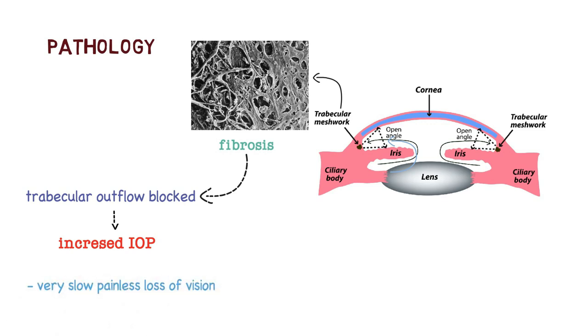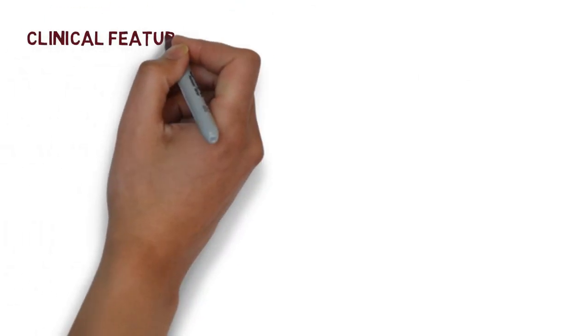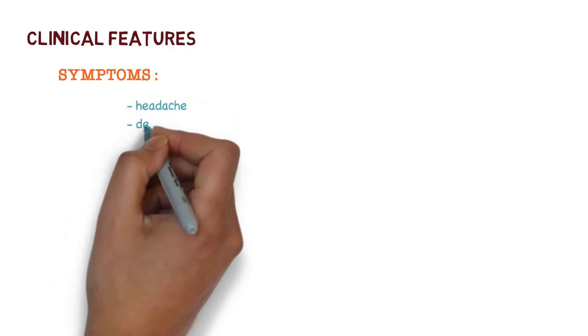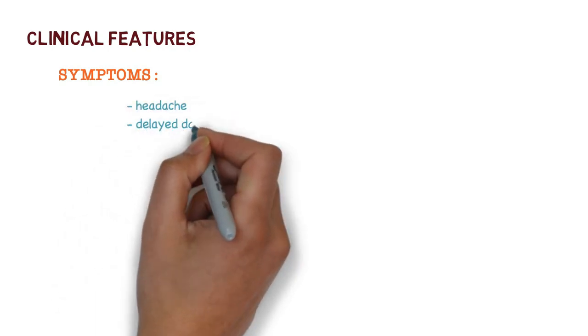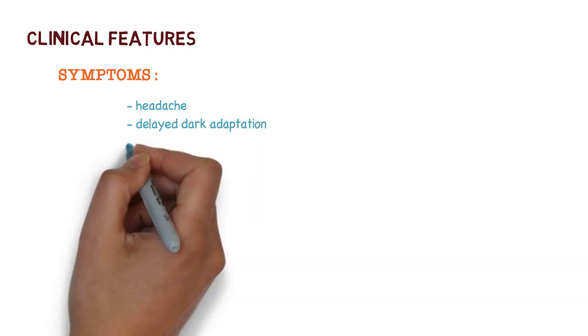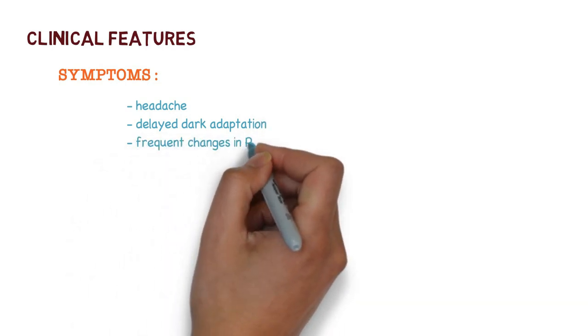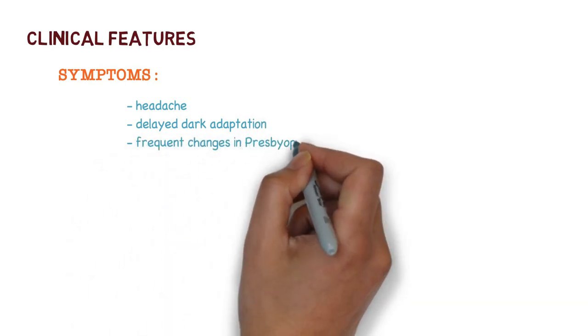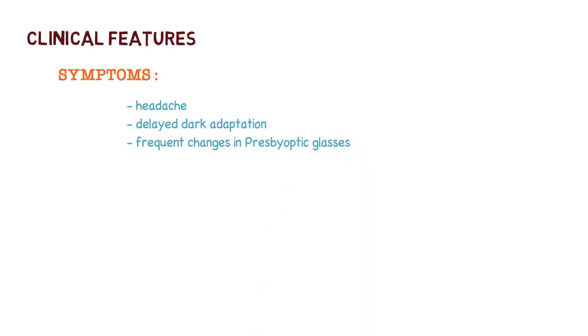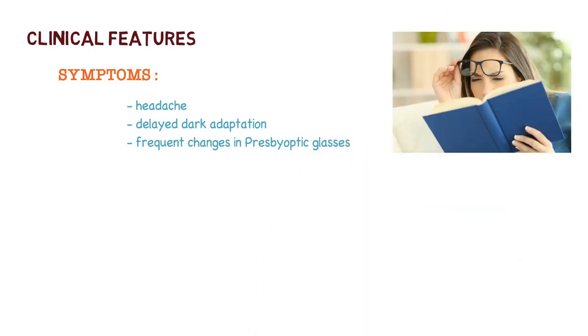The clinical features: symptoms include headache due to high intraocular pressure, delayed dark adaptation, and frequent changes in presbyopic glasses. These are the classical symptoms of primary open angle glaucoma.